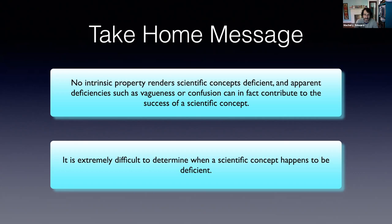The second point I will argue in the last section is that it turns out to be extremely difficult to determine when a scientific concept happens to be deficient and as a result calls for conceptual engineering. Extremely difficult does not mean impossible, but means really quite challenging. When we look at the history of science, it's not clear whether scientists, when fully immersed in scientific research, can really be in a good position to determine whether a scientific concept should be engineered or not. That will give rise to a new challenge to conceptual engineering.